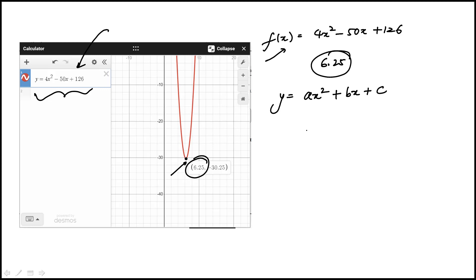So if you're given a general quadratic, the axis of symmetry, the equation of the axis of symmetry is minus b over 2a. And this is also the x coordinate of the vertex. So that's really what we're looking for.